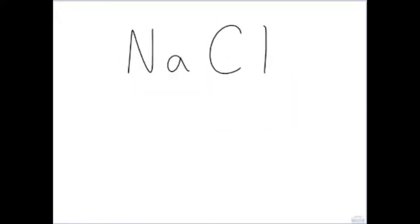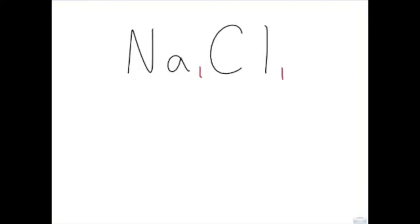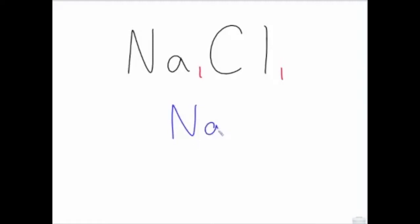Let's look at sodium chloride, more commonly known as table salt. There are symbols for the two elements, but there are no little numbers called subscripts. If you do not see any subscripts, it is understood that there is just one of that atom. We have sodium and chlorine — there is one sodium and one chlorine.